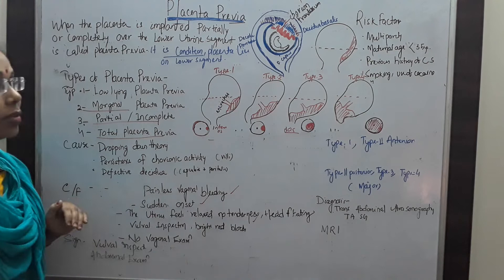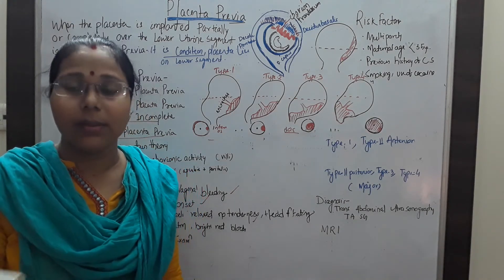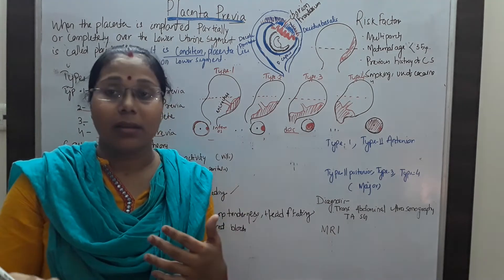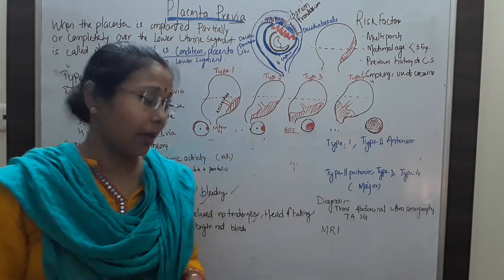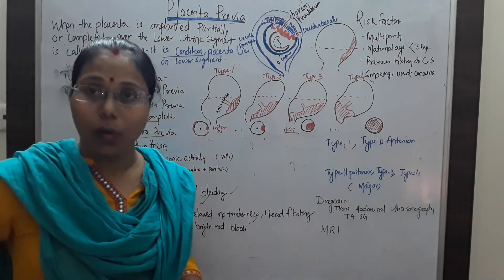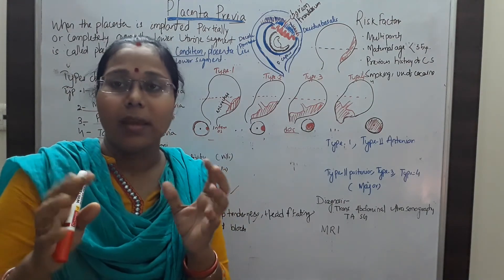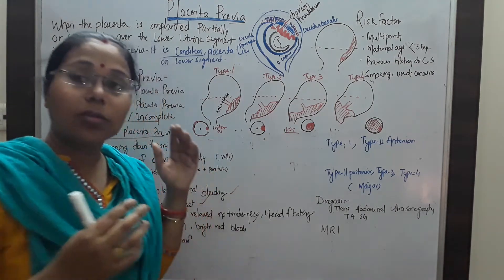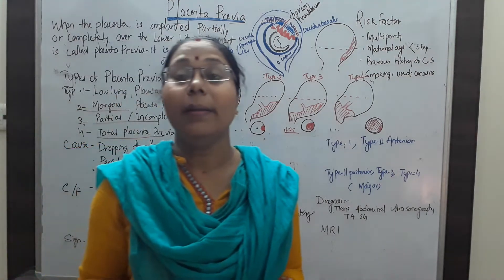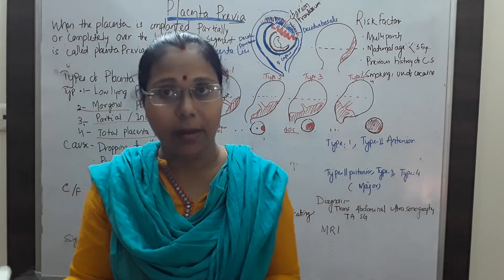Next, we go to know about the clinical features. The clinical features state that it is a painless vaginal bleeding. In placenta previa, bleeding is one of the signs, but the bleeding is painless — the patient does not complain of pain during vaginal bleeding. The bleeding has a sudden onset. The uterus feels relaxed, and on abdominal examination we find the uterus is not tender — it is soft as normally happens in pregnancy. On vulval inspection, we see the type and amount of bleeding and the color of the bleeding.